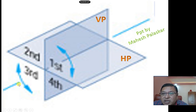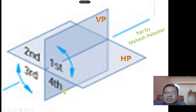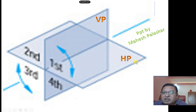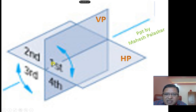I will tell you about the quadrants. Here you can see the vertical plane (VP) and horizontal plane (HP). These planes are transparent, very thin, and their length and width is infinite. The intersection of HP and VP gives the XY line.